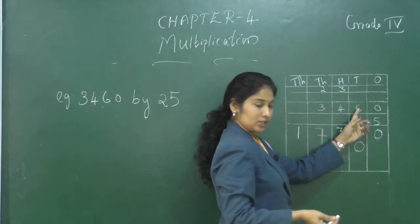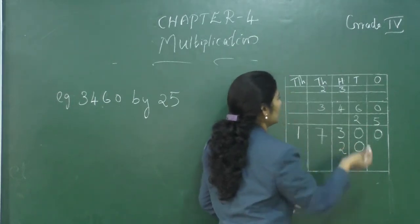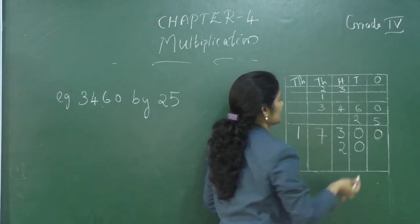Next, 2 into 6? 12. So, 2 we can write at the 100's place down. And 1 carry over, we can write at the 1000's place.